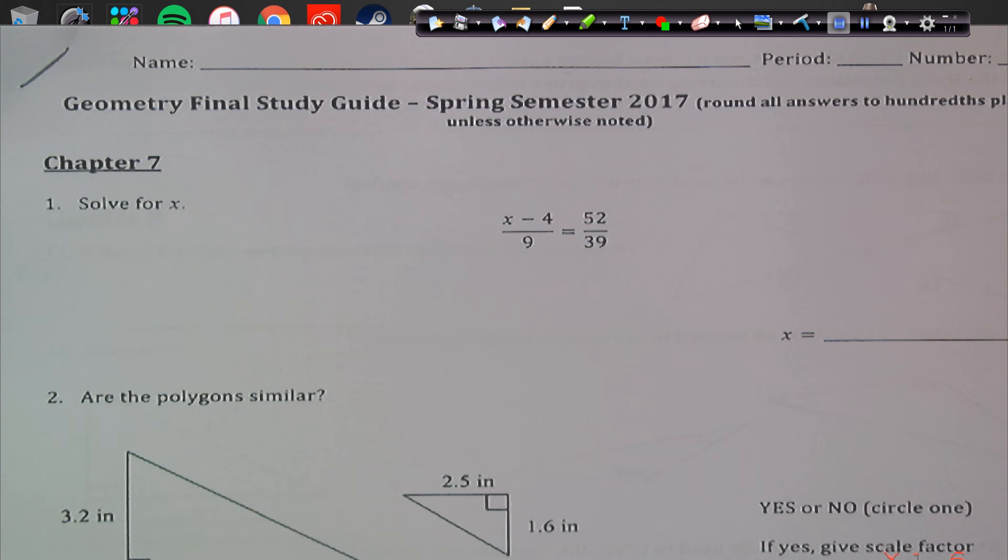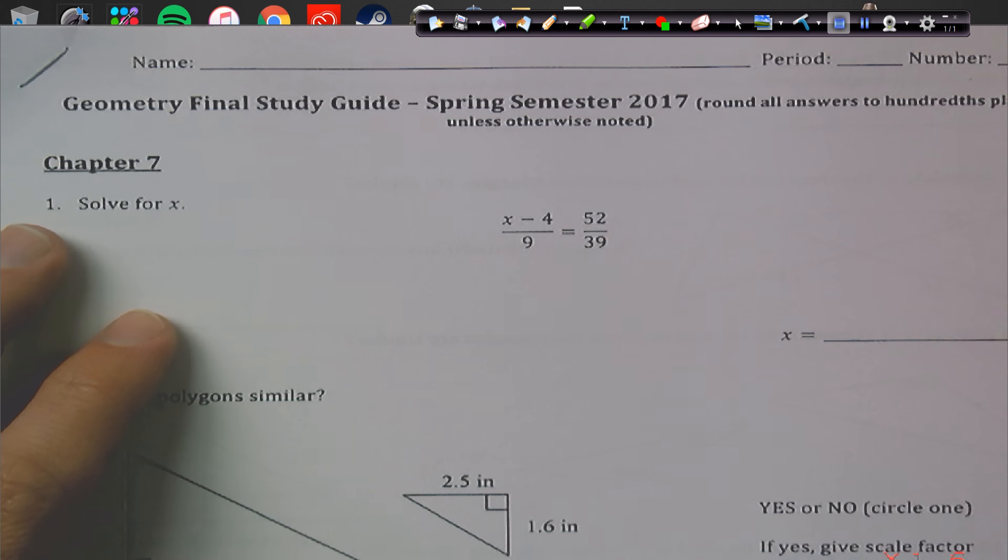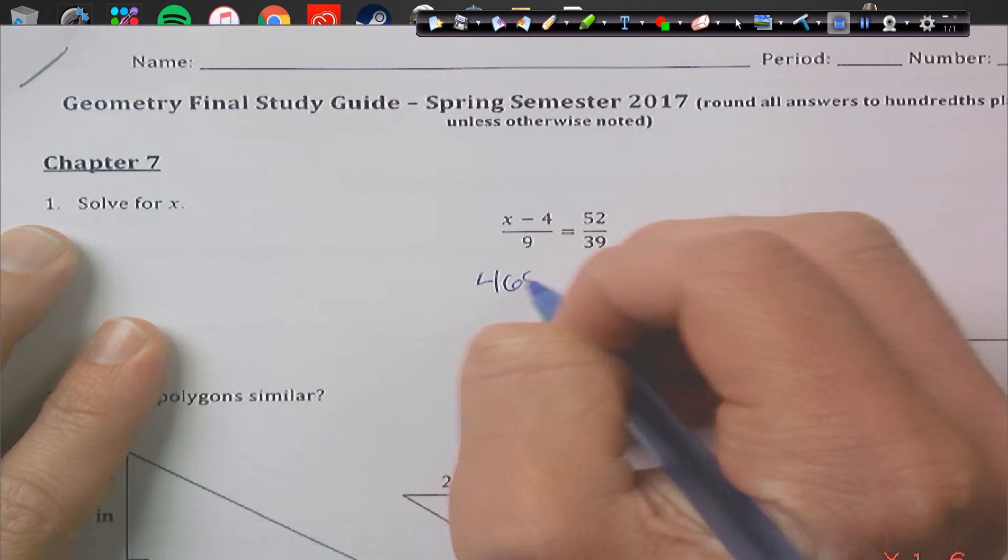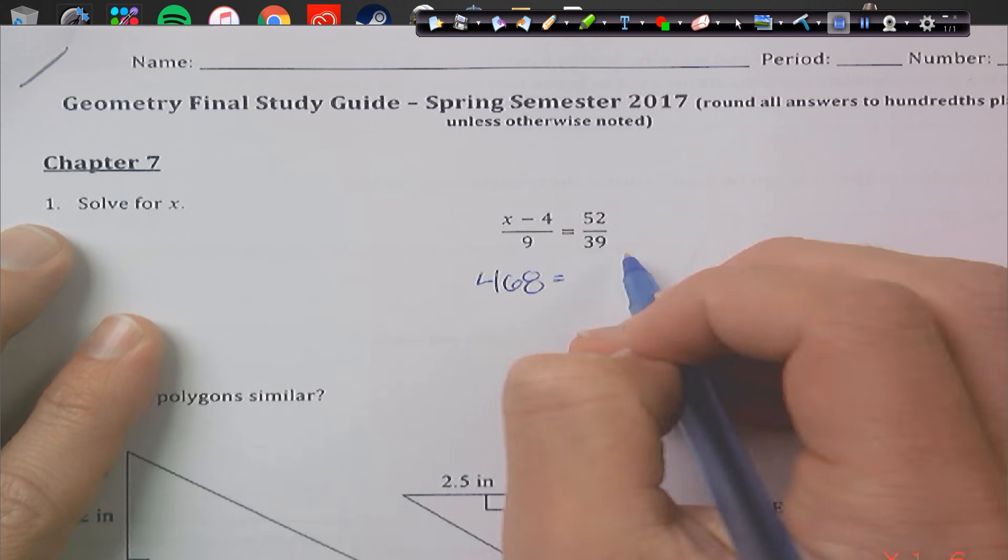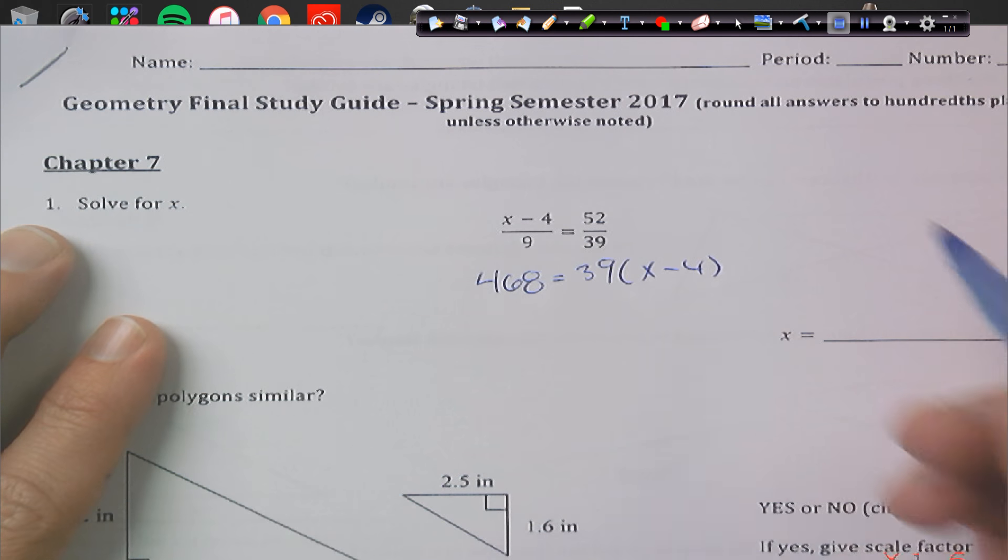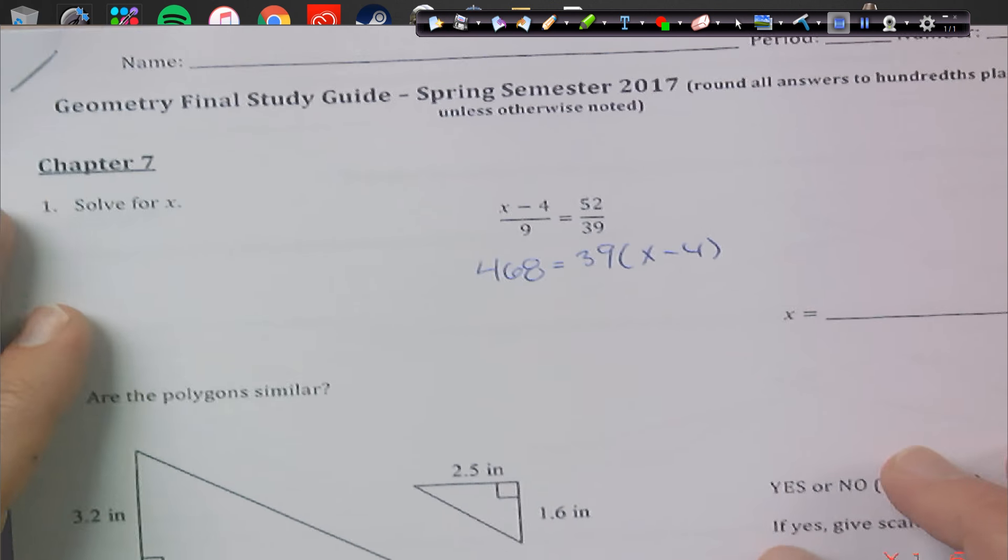Our first problem here is a cross-products problem, so I'm going to be using my calculator quite a bit on here. So I highly recommend that you do as well. So we're going to go ahead and first multiply 9 and 52, you get 468. And then here we've got to distribute, so if you have 39x minus 4, we're going to distribute that 39.